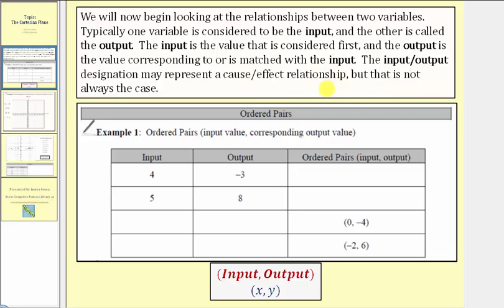Because of this we sometimes say that the input controls the output, or that the output depends on the input. Whenever we have values that represent the input-output relationship we can organize them in what's called an ordered pair.